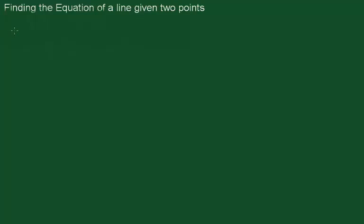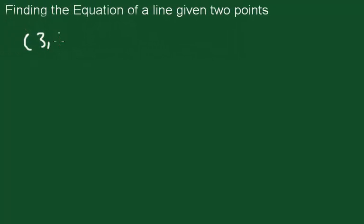In this video we'll find the equation of a line given two points. So let's say we have the point (3, 1) and another point (4, -1).